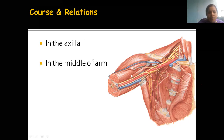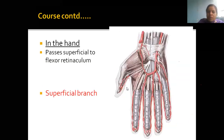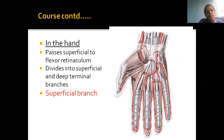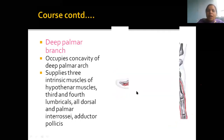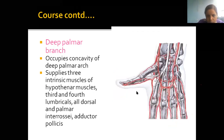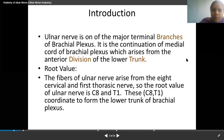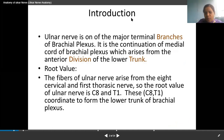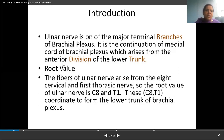We are going to see its course in the axilla, in the arm, and in the forearm. Its distribution in the palm is very important. The ulnar nerve is the major terminal branch of the brachial plexus, and it is the continuation of the medial cord, which arises from the anterior division of the lower trunk. Root value: C8 and T1.